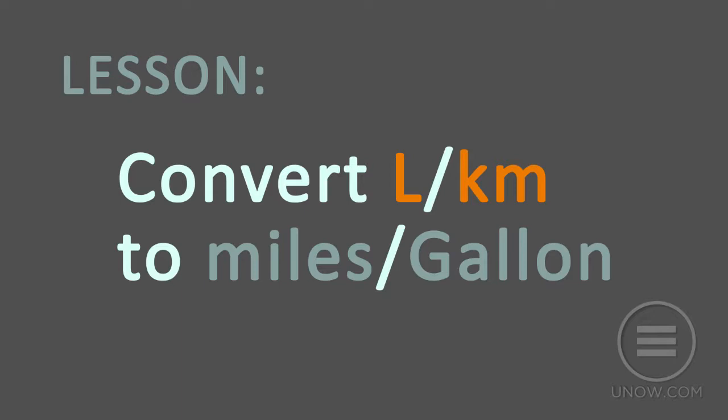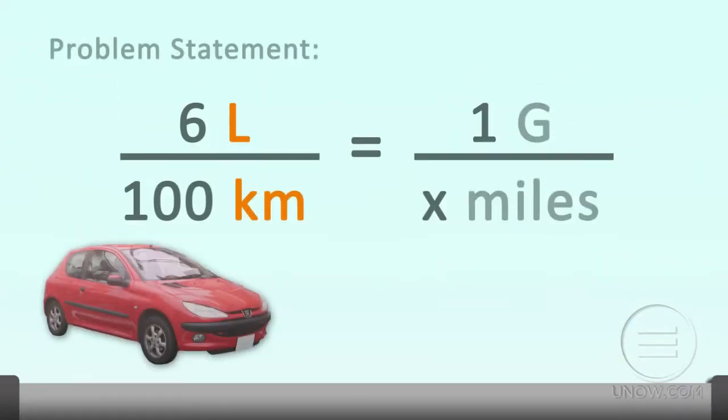So let's start with some facts. What do we know? Well, let's write down the problem statement. We have 6 liters per 100 kilometers, and I want to know how far would I travel on one gallon of gas? And how far means variable because it's a question, so I have x miles. So this is telling me that I can travel 100 kilometers on 6 liters. And I want to ask, okay, well then how many miles could I travel on one gallon?